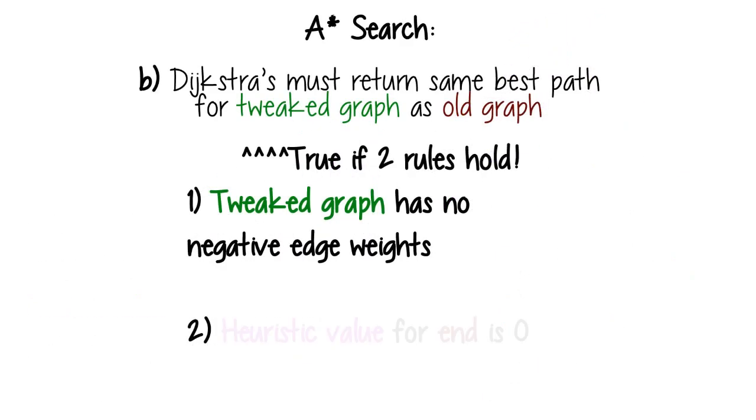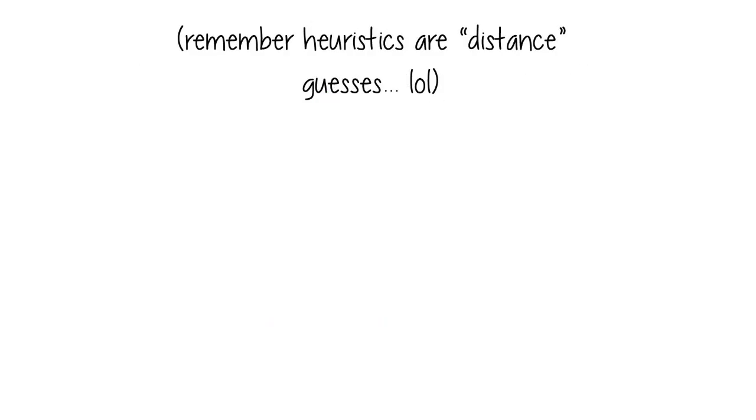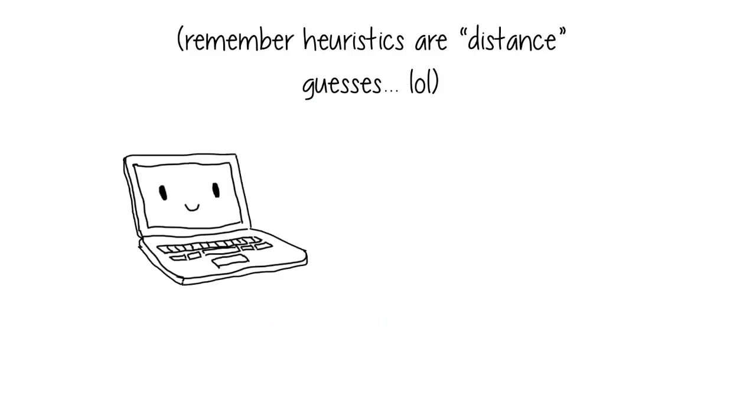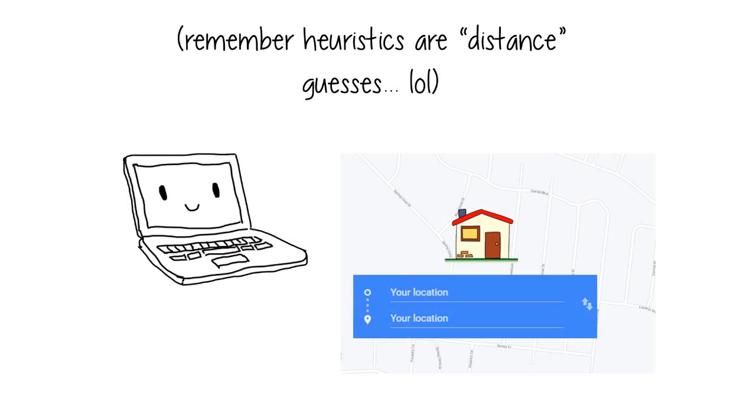Second, a heuristic for the end node must be zero. That's just like, common sense. Like, if I ask my computer to guess how far away my house is from itself, the answer really shouldn't be, like, seven.